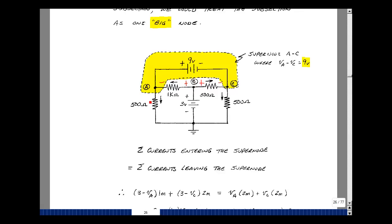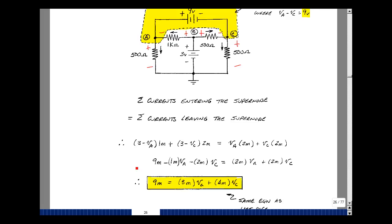And then the currents that are leaving the node would be this current, which would be V sub A divided by 1 half of K or times 2 milli. And then the same thing also over here with V sub C. So let's multiply all this out and group terms here. So I've got 3 times 1 milli and I've got 3 times 2 milli. So that gives me 6 plus 3 or 9. And I've got minus 1 milli times V sub A. And then I've got minus 2 milli times V sub C. I got this from my currents leaving the node.